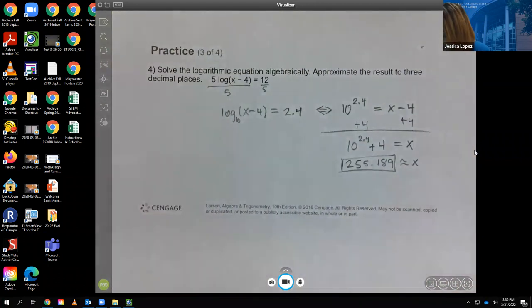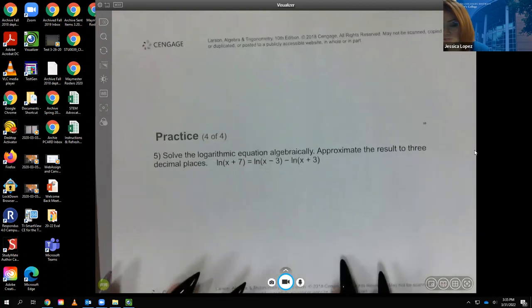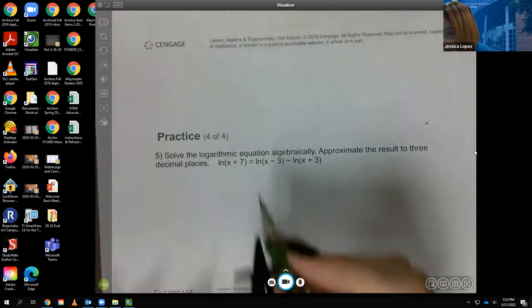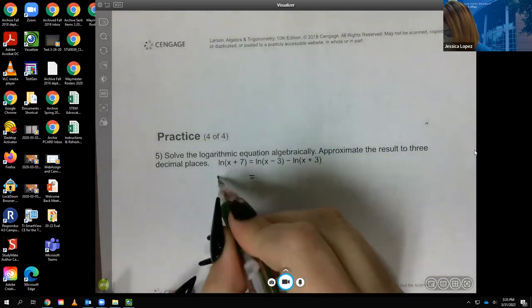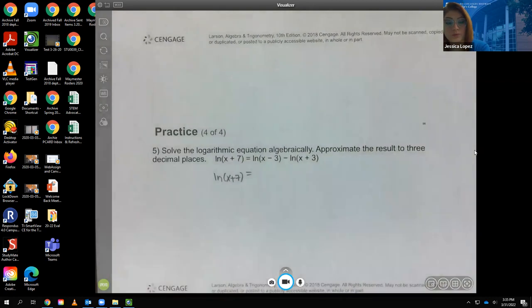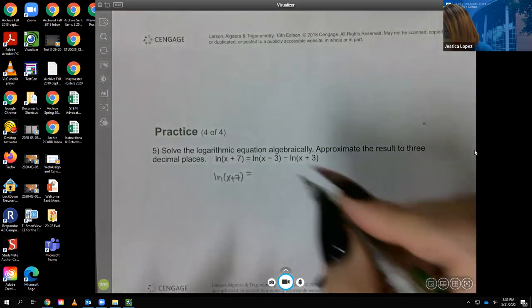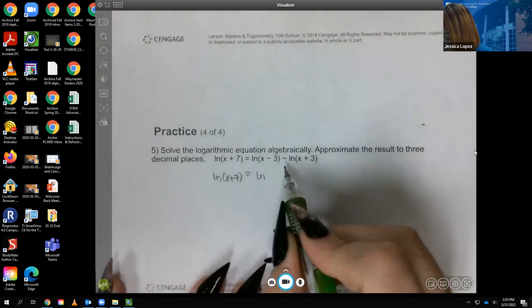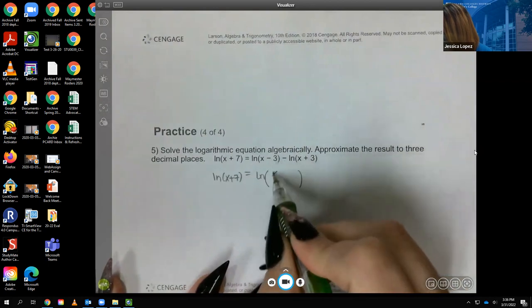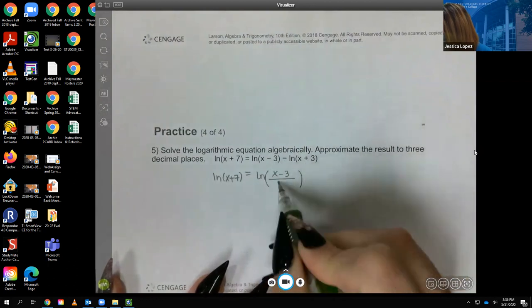Now, the last problem is also a logarithmic equation, but this one does have every term with a log. So on the left-hand side of this equal sign, I do already have one log. But on the right-hand side, I don't. I need to have it written as one log. So I'm going to use my quotient property because my quotient property says if there's a minus sign in the middle, I'm going to take this argument over this argument.